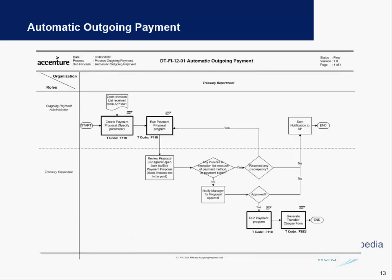For the outgoing payment process, an outgoing payment administrator — usually an analyst-level position — will create proposals in the system. A payment run is then created in SAP in transaction F110. A supervisor or senior accountant then reviews these items in the proposal, checks for any mismatches, and approves or disapproves them. Finally, the payment program is run, and if any checks need to be created, they are also printed for the outgoing payment.